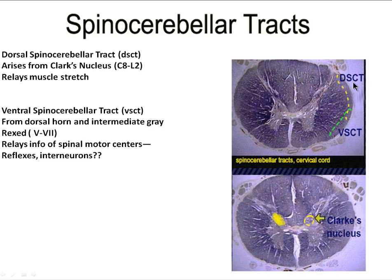The dorsal spinal cerebellar tract originates from a nucleus called Clark's nucleus, which exists between C8 and L2. We're also going to talk about the ventral spinal cerebellar tract, which originates in the intermediate gray matter of the spinal cord and relays information about interneuronal activity.